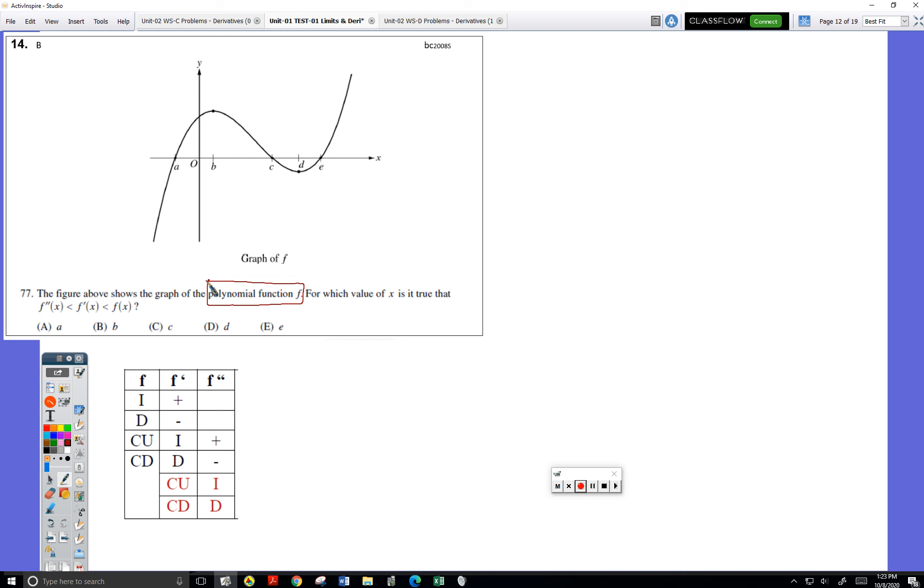The reason I said both is, gosh darn it, the AP test writers have been a little bit mean on that one. Like, it makes no sense to me that you would have to say both, but I've seen a question where you have to say both. So, think of it this way, if you have a polynomial, it's going to look something like this. Here's an example of a polynomial. Here's another example of a polynomial. Here's another example. Here's another example. They all have just kind of a nice smooth up and down motion.